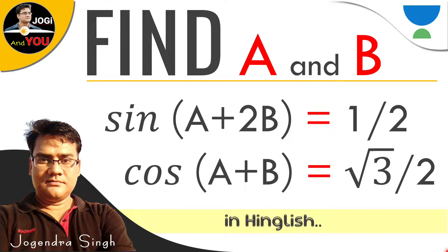Hi, this is Jogundar Singh and you are watching Jogi and You. Friends, today's question is from Trigonometry. The question is: find a and b, where sin(a + 2b) is equal to root 3 upon 2, and cos(a + b) is equal to under root 3 upon 2. These things are given — find the value of a and b. So, this is how we can solve it.